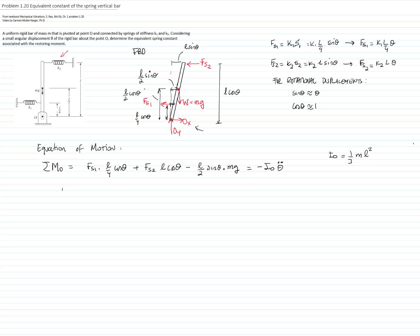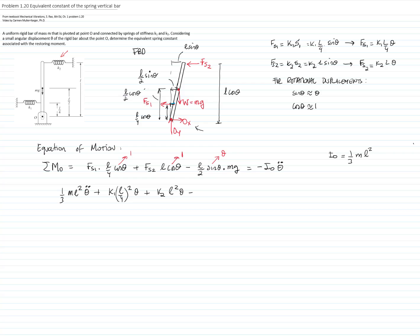We can write this as (1/3)·M·L²·θ̈ plus, substituting the spring forces and using cosine θ ≈ 1: K1·(L/4)²·θ plus K2·L²·θ. Since cosine becomes 1 and sine becomes theta, the weight term gives negative (L/2)·Mg·θ. That equals 0. Grouping everything that multiplies theta, we get the complete equation of motion equal to zero.